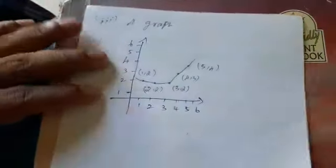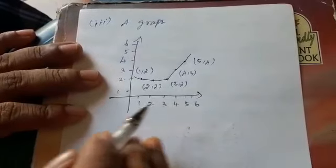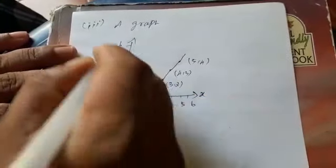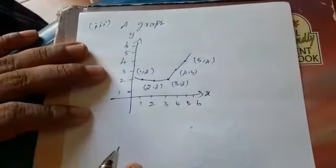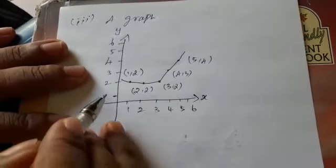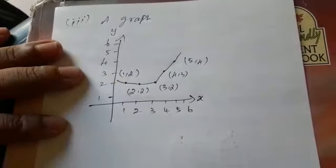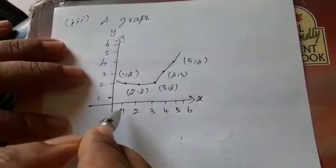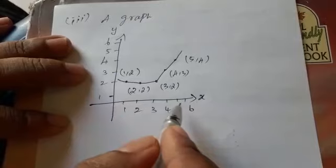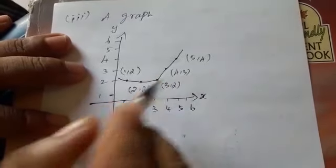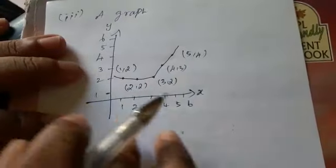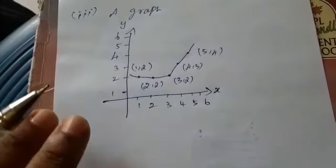Next, a graph. On the graph, x-axis goes from 1 to 6 and y-axis also goes up to 6. Plot the points: (1,2), (2,2), (3,2), (4,3), (5,4). Graph is drawn accordingly. This question is completed.